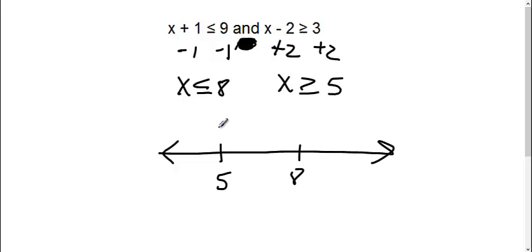So now if I were to graph this, let's use some different colors. So if I graph this 5, it says where x is greater than or equal to 5. So I'd use a bracket and then I would go in this direction.